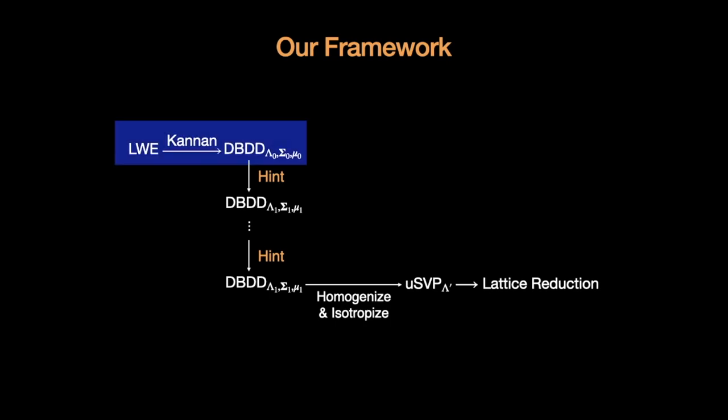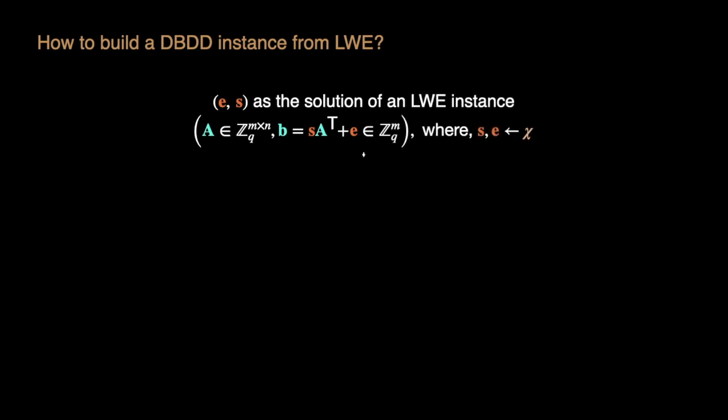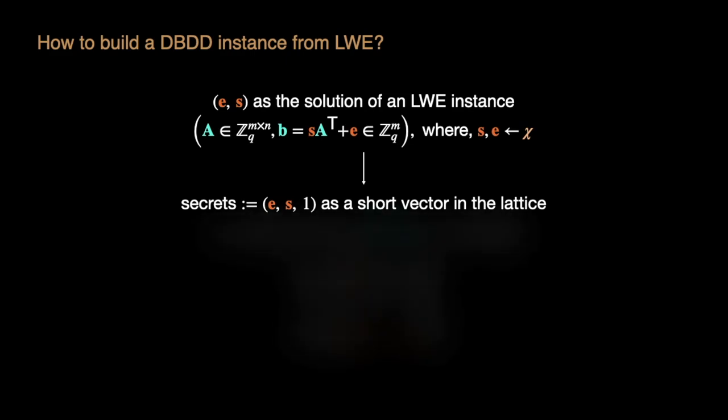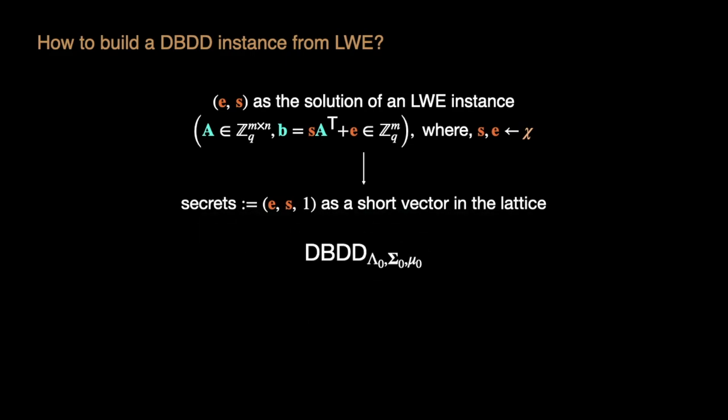Let me present the first step. The technique is standard. Assume that ES is the solution of a LWE instance. We can construct the following lattice, in which ES one is a short vector. Variance and mean are defined with the variance and mean of the error, except for the last coefficient, which is 1 with covariance 0. We finally have our DBDD instance.